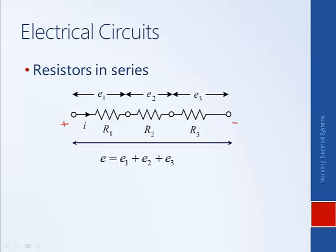Applying Ohm's law to each resistor individually — recall that voltage equals current times resistance — and since all three resistors carry the same current I: E1 equals I times R1, E2 equals I times R2, and E3 equals I times R3.